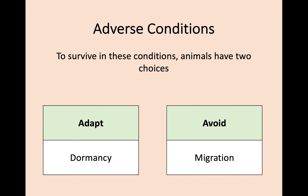In terms of these adverse conditions, if you want to survive, you have two choices. You can either adapt to it through different levels of dormancy, which we're going to talk about — hopefully you've come across the word dormancy before. The other option is simply to avoid it, to leave, and that would involve migration. We're going to talk a little bit about migration at the end of this lesson, but first of all we can have a look at dormancy.